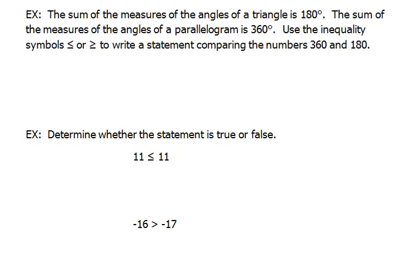Now our next example says the sum of the measures of the angles of a triangle is 180 degrees. The sum of the measures of the angles of a parallelogram is 360 degrees. This says use the inequality symbols, and again we have to know what those symbols are. The first one is less than or equal to, the second one is greater than or equal to, to write a statement comparing the numbers 360 and 180.